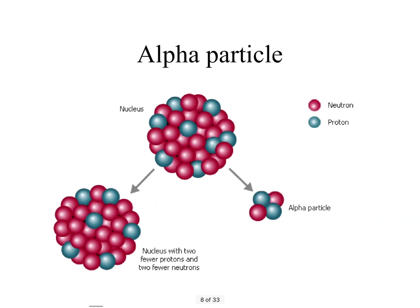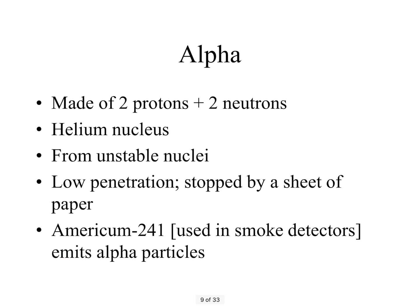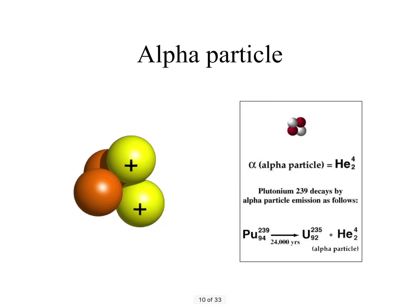The three types of radiation are alpha, beta, and gamma. Alpha particles are two protons and two neutrons — an alpha particle is the same thing as a helium nucleus. Remember from Rutherford's experiment in fifth year, he used alpha particles; his source was americium-241. Alpha particles come from unstable nuclei, they have low penetration — stopped by a sheet of paper — and americium-241 used in smoke detectors is an example.